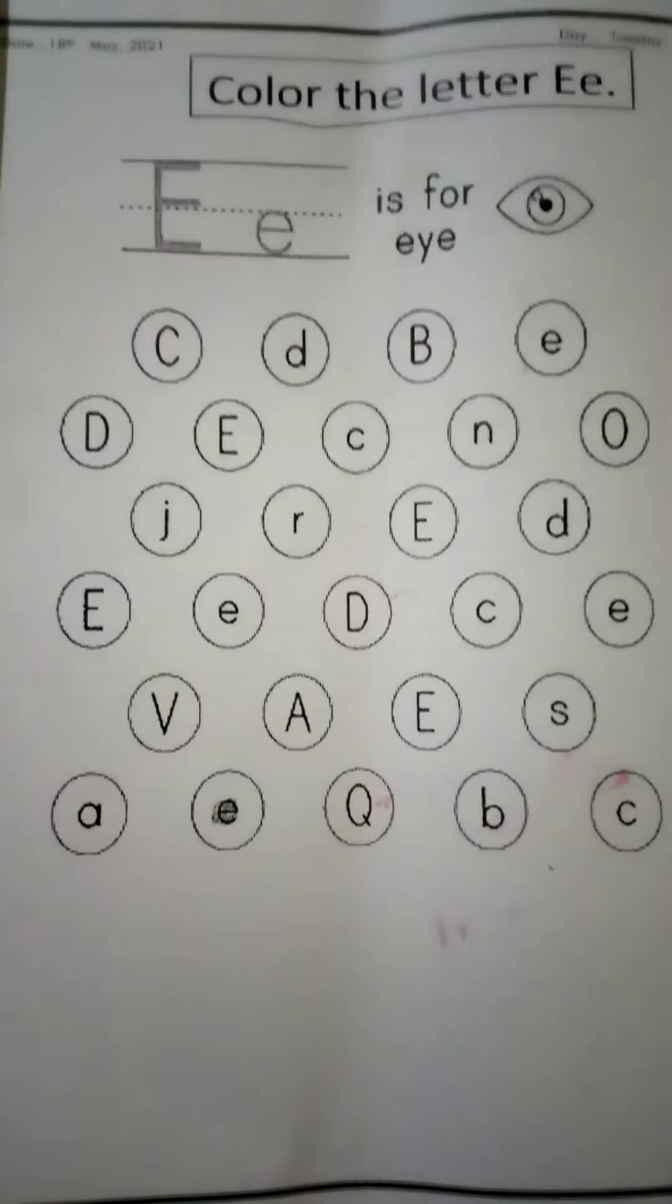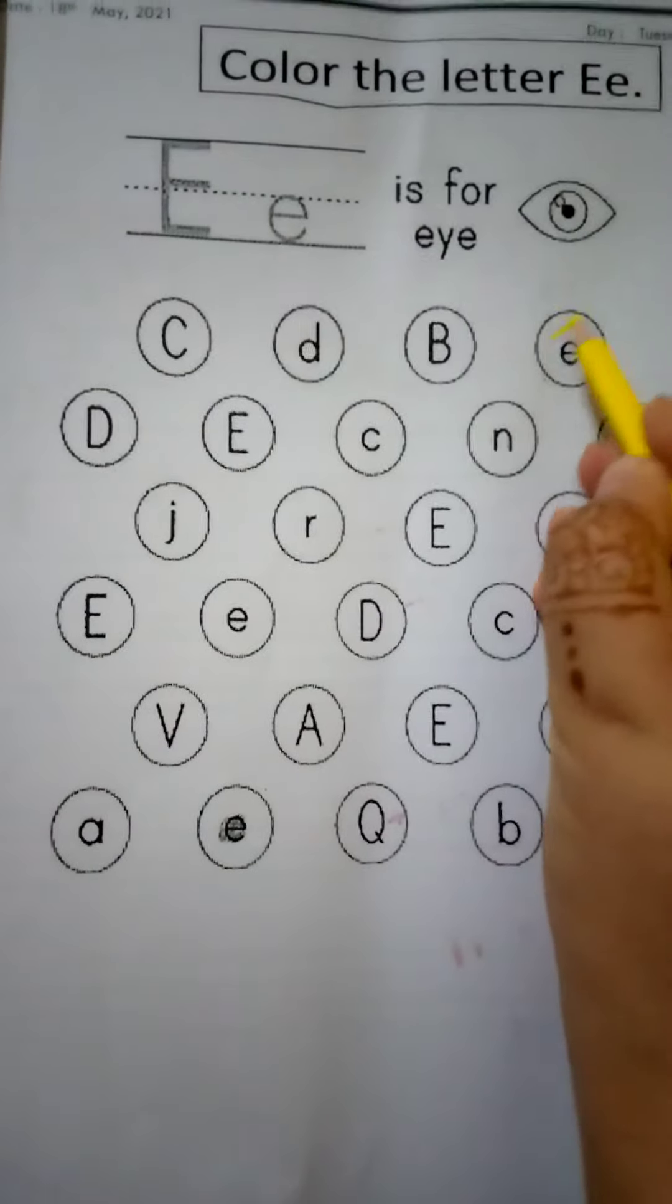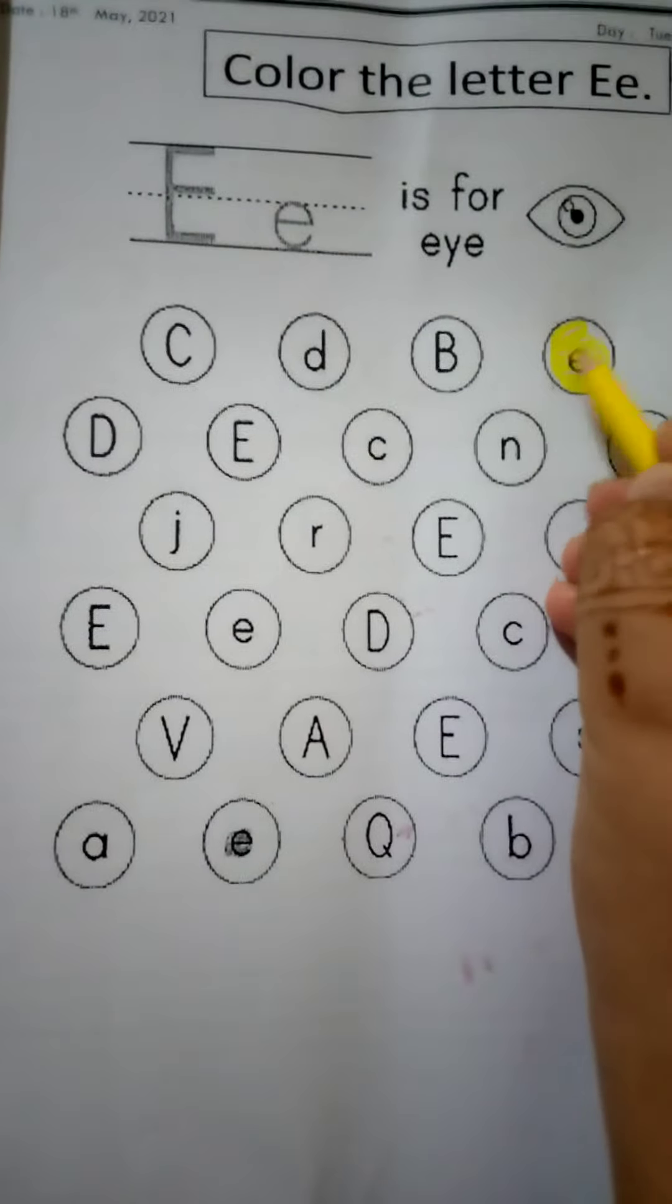Now color the circles having letter E. Let's start coloring. Letter E. I am using yellow color. You can use any color.